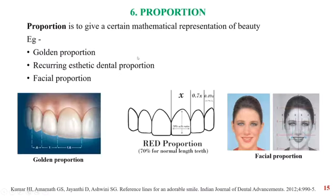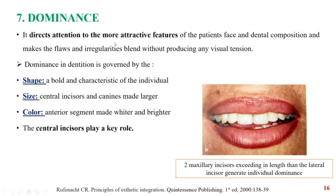Proportion gives a mathematical representation of beauty. The various proportions include golden proportion, pristine proportion, recurrent aesthetic dental proportion, and facial proportions — both vertical and horizontal. Dominance directs attention to the more attractive features of the patient's face and is governed by three factors: shape of the teeth, size, and color. The shape gives a bold and characteristic appearance, whereas the size of the central incisors and canines can be increased to give a dominant appearance. Color also plays a vital role.